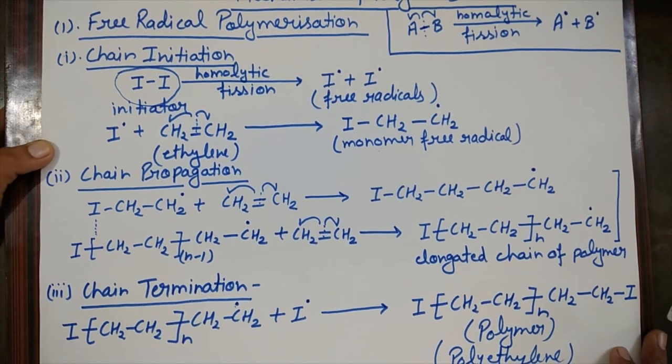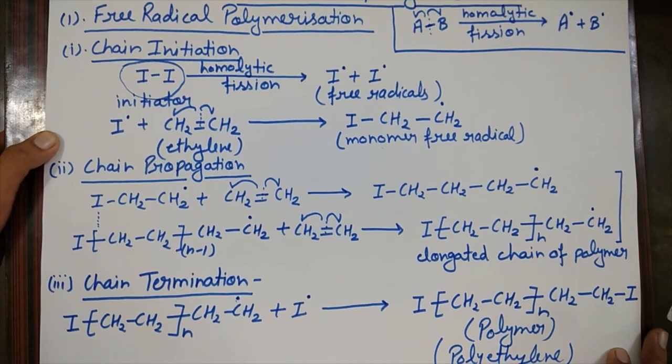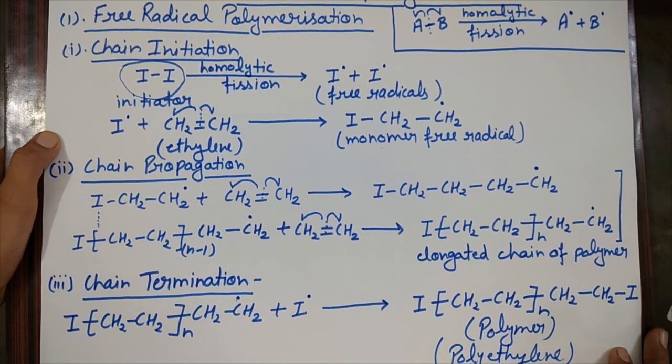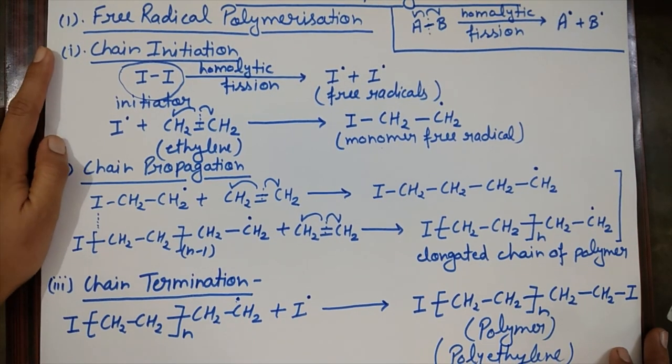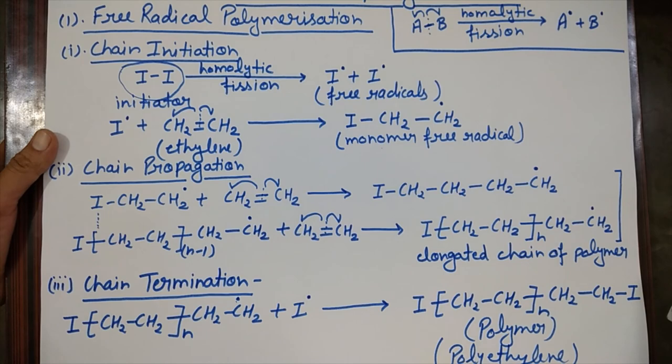I hope you understood free radical polymerization. From the next part, the remaining two categories — anionic and cationic polymerization — will be discussed. Thank you so much. Have a great day.